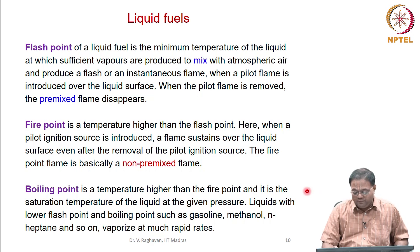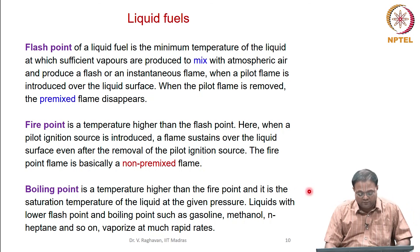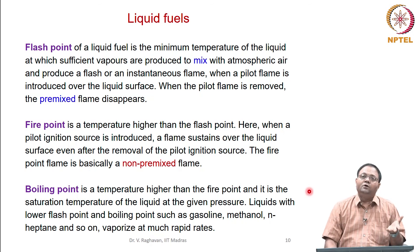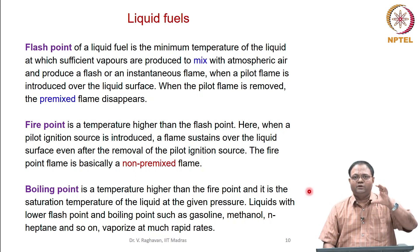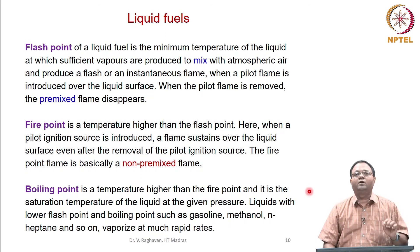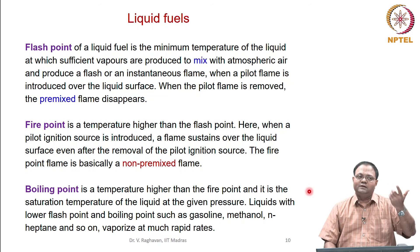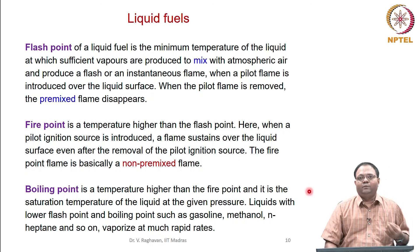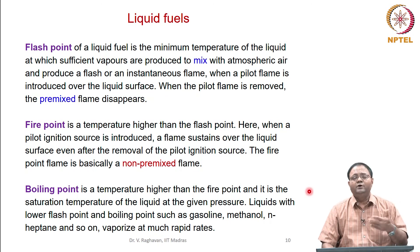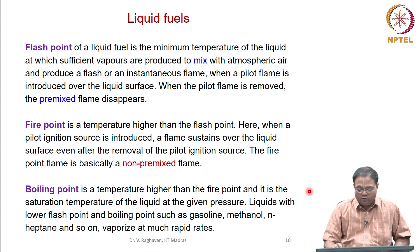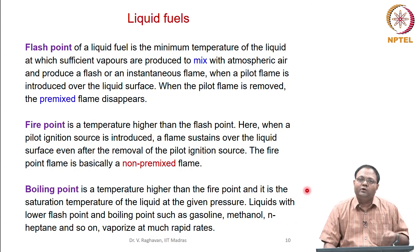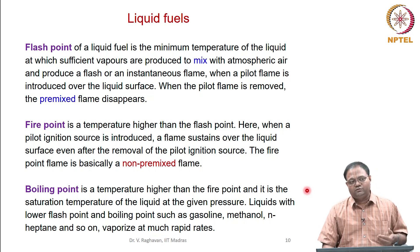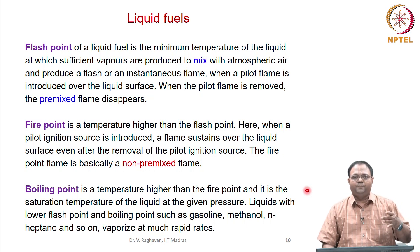Boiling point is a temperature higher than the flash point. Once the liquid temperature reaches the boiling point, the entire liquid starts to vaporize and whatever energy comes from the ambient is used for vaporizing the liquid — the energy input goes entirely to the latent heat of vaporization. Boiling point is the saturation temperature at a given pressure; at atmospheric pressure it is called the normal boiling point. As operating pressure increases, the saturation temperature also increases. A higher boiling point means the liquid is not easily vaporized and must be heated to near this temperature for continuous burning.